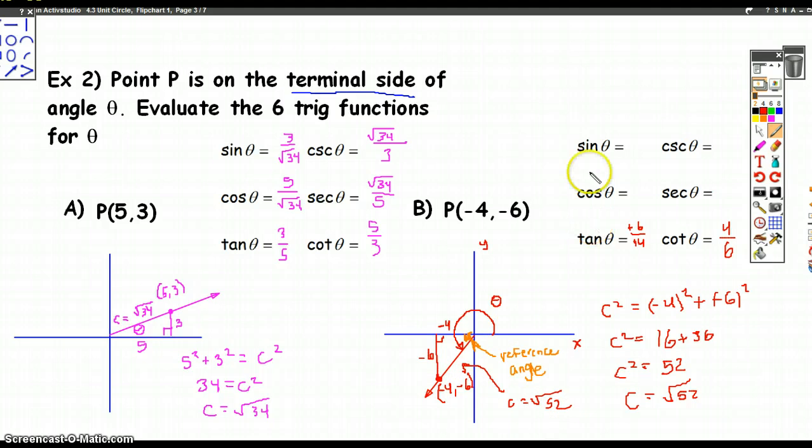The sine of theta is opposite over hypotenuse. So negative 6 over square root of 52. Cosecant is square root of 52 over negative 6. And cosine is negative 4 over root of 52. And secant is therefore root of 52 over negative 4.